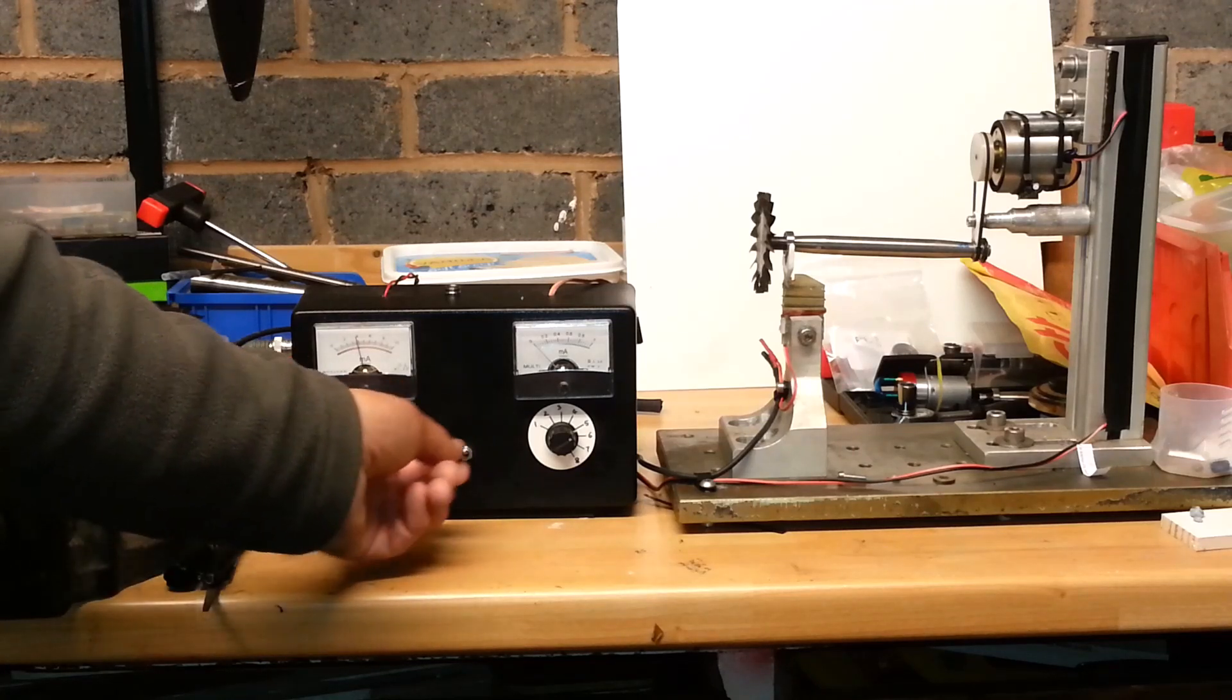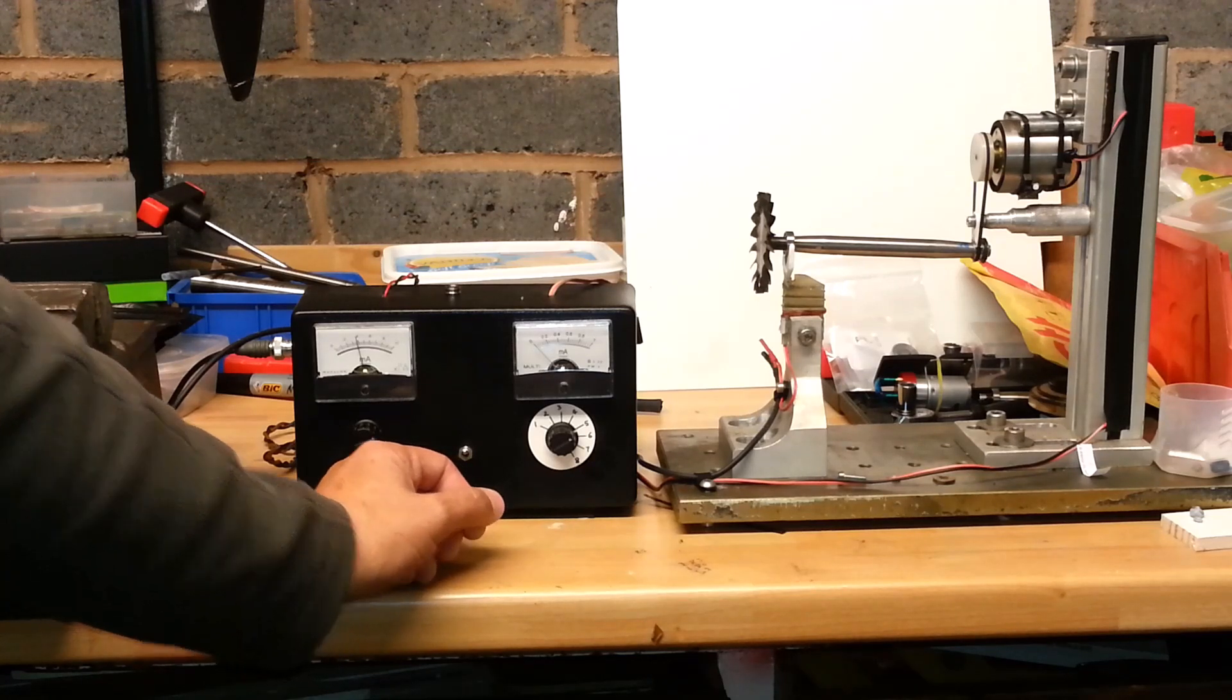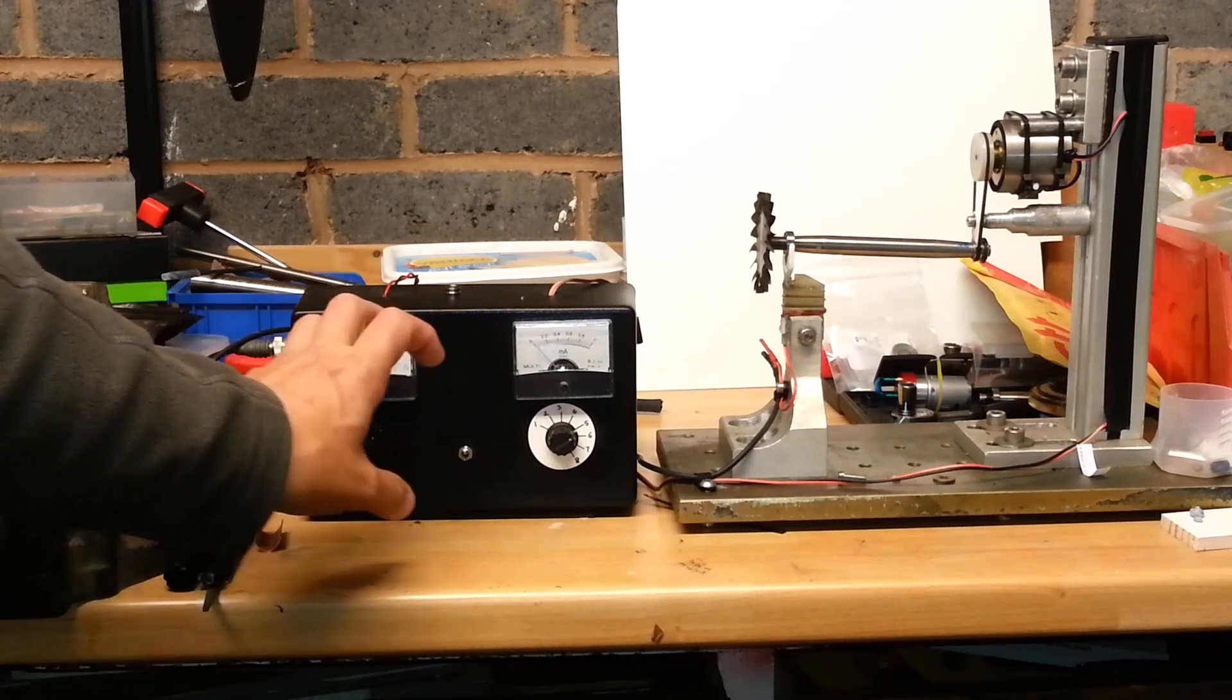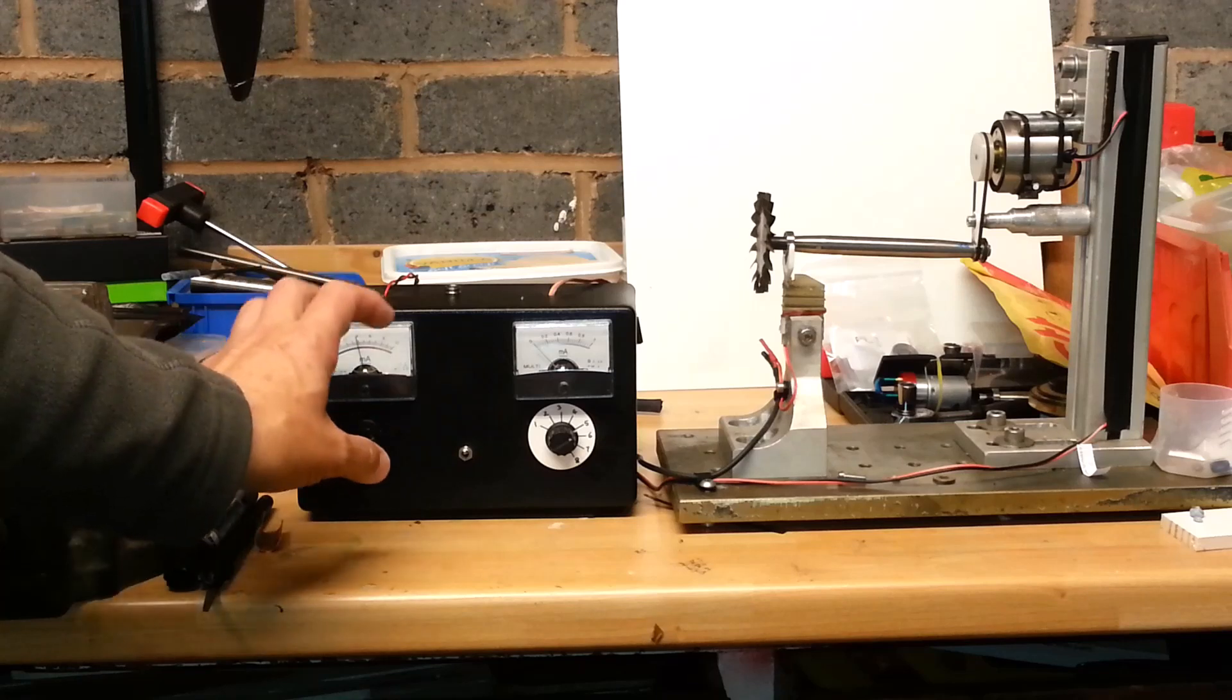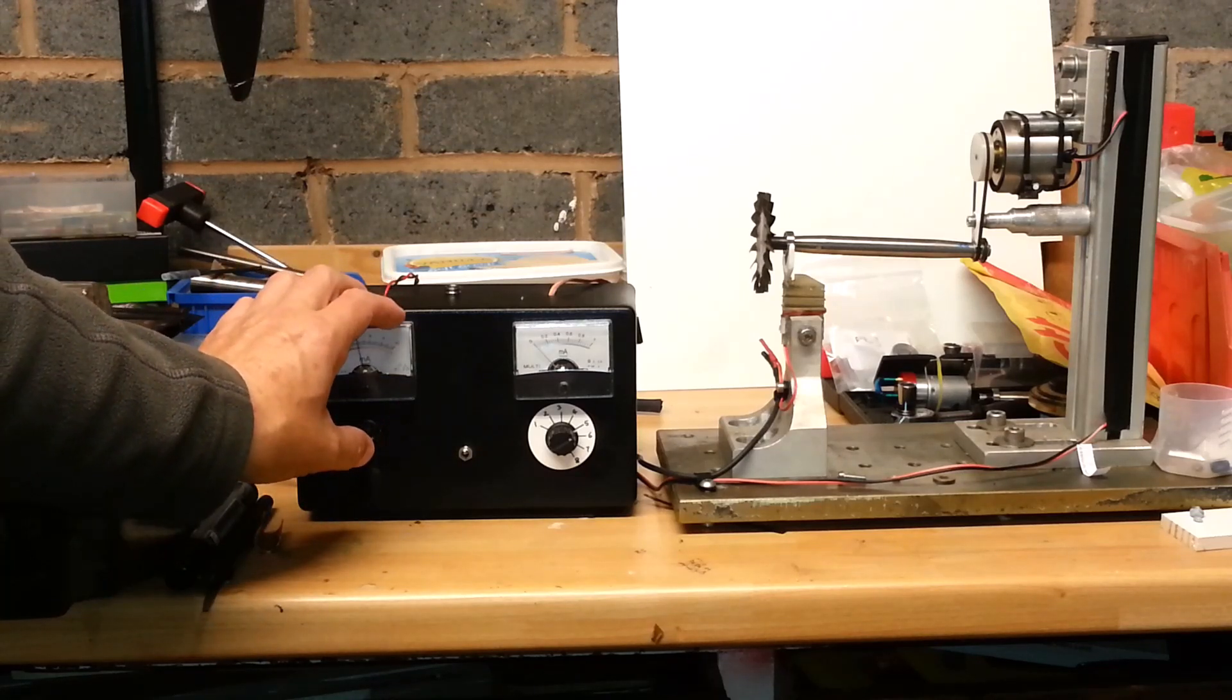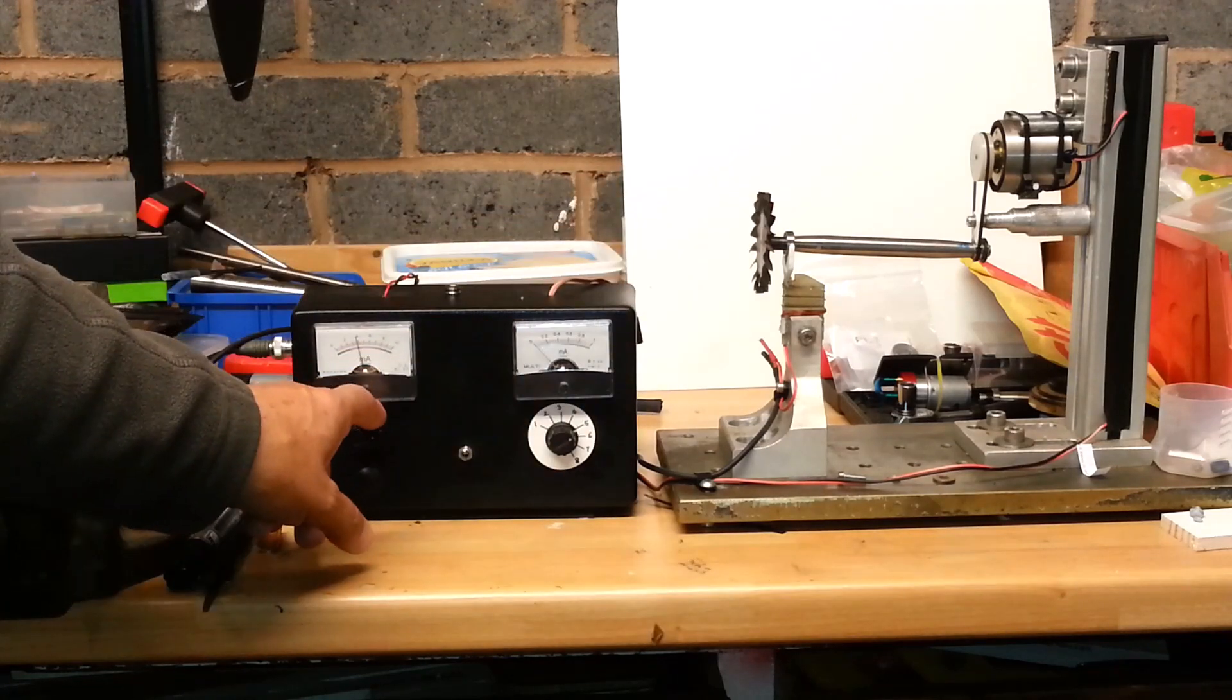So you can actually get these. You can get a speed controller off eBay and a digital readout which might be better. So you don't need to make two thirds of the circuit. You could just buy this. I think it is about eight pound off eBay. And all it is is a voltage adjustment to speed the motor up and down.